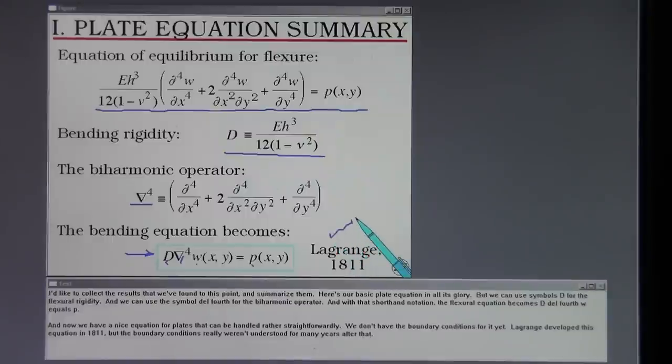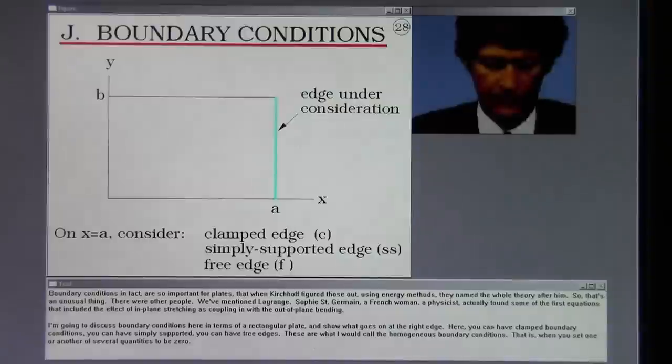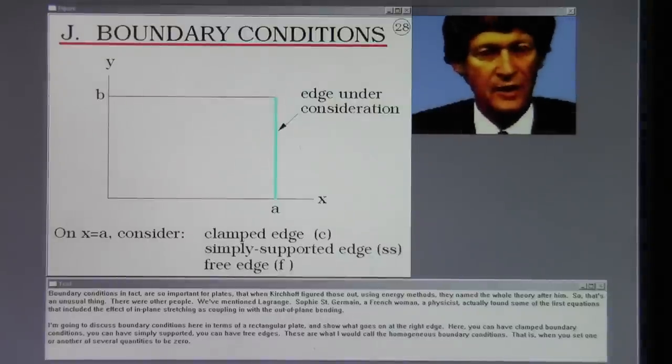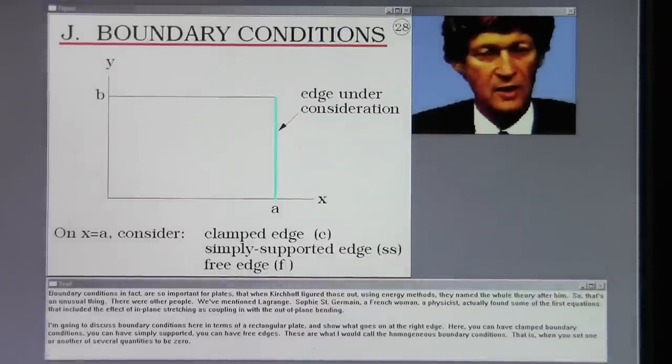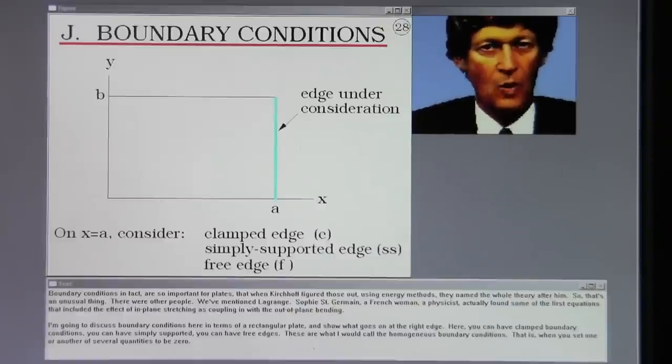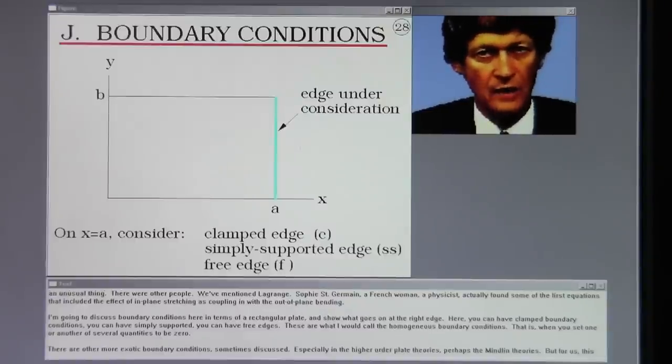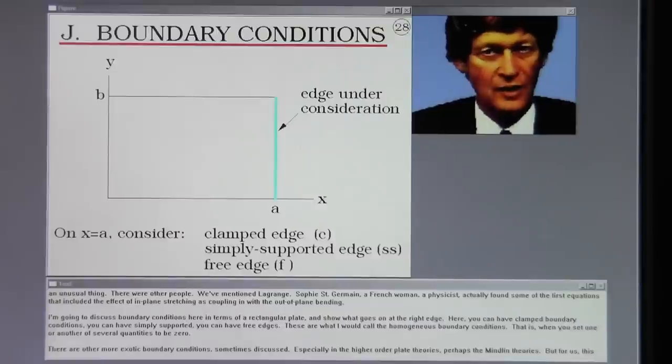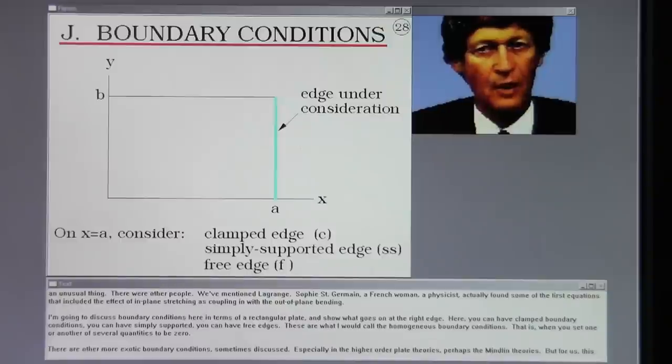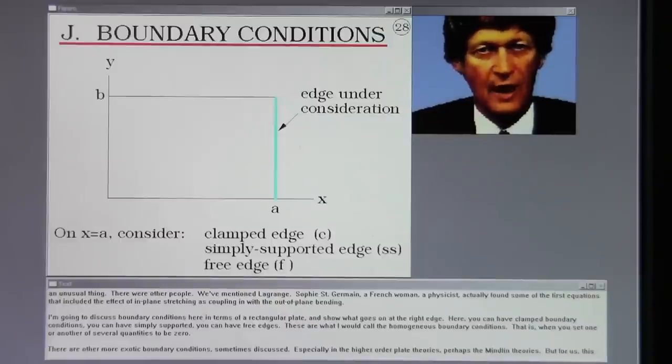Lagrange developed this equation in 1811, but the boundary conditions really weren't understood for many years after that. Boundary conditions in fact are so important for plates that when Kirchhoff figured those out using energy methods, they named the whole theory after him. So that's an unusual thing. There were other people, we've mentioned Lagrange, Sophie Saint Germain, a French woman, a physicist, actually found some of the first equations that included the effect of in-plane stretching as coupling in with the out-of-plane bending.